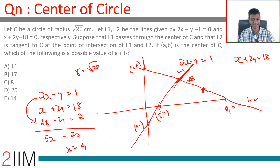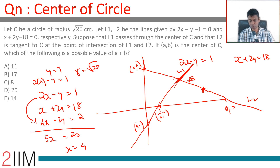With x=4, substituting into 2x minus y equals 1: 8 minus y equals 1, so y equals 7. The point of intersection is (4, 7). Now we want to find the center (a, b).